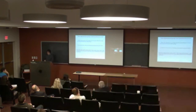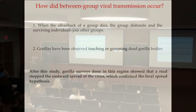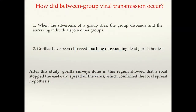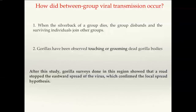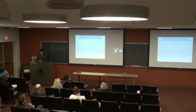After this study, gorilla surveys done in the region also showed that a road stopped the eastward spread of the virus. There were very low gorilla densities on the west side of the road but normal densities on the east side, suggesting the virus had been spreading eastward and the road acted as a barrier — further evidence that Ebola spreads spatially through animal populations.